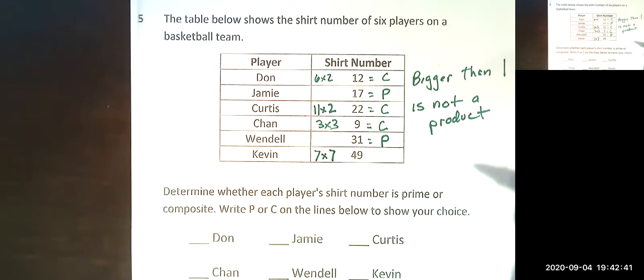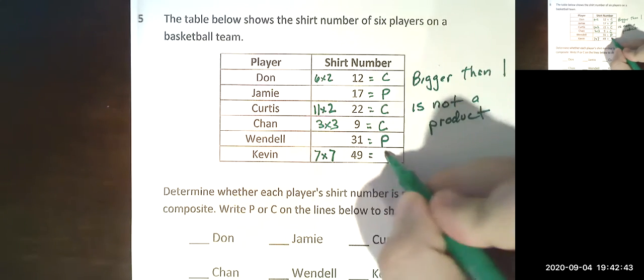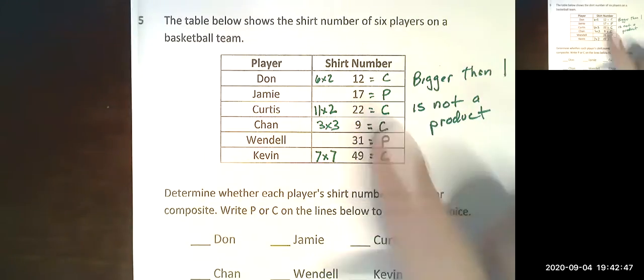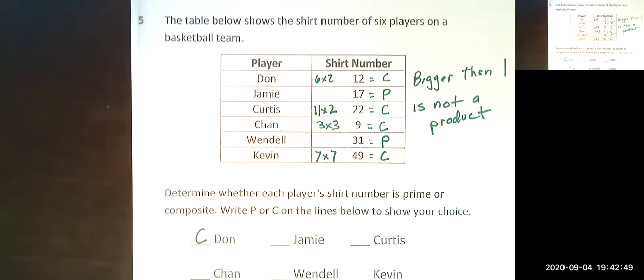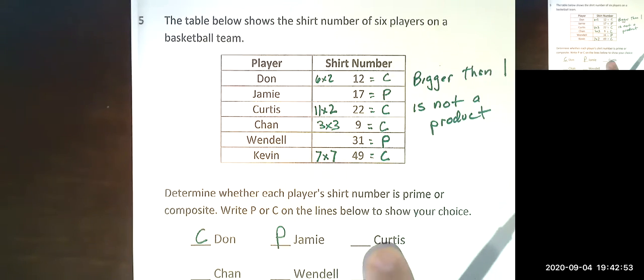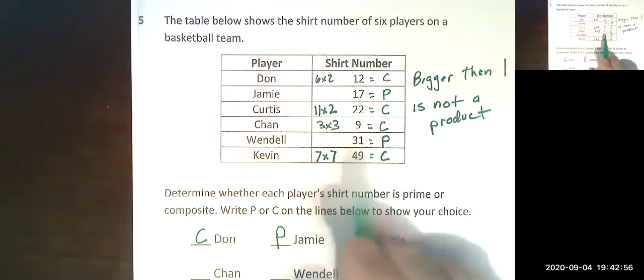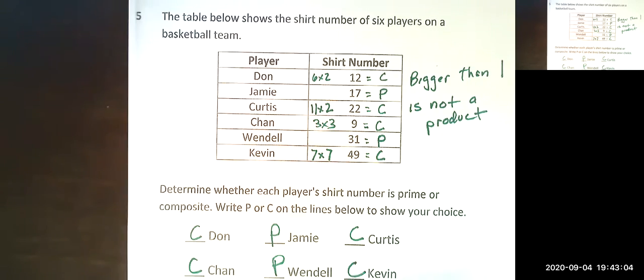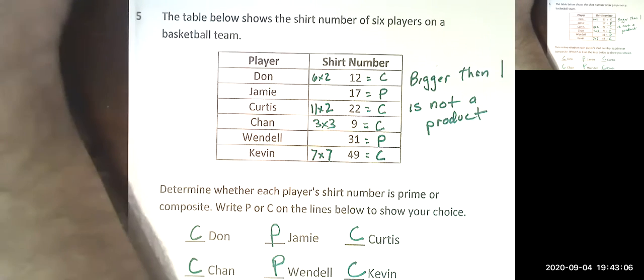So I would come down here to my chart and just copy in C for Don. Jamie is a P, Curtis is a C, Chan is a C, Wendell is a P, and Kevin is a C. All right guys, hope that helped. We'll talk to you soon.